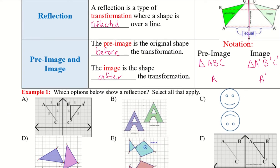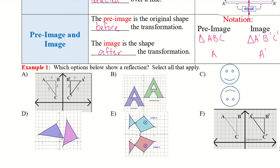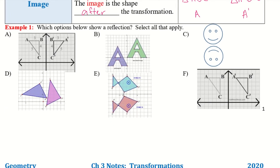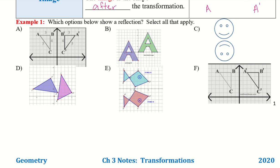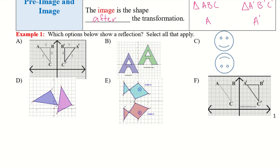Let's take a look at example one. Which option below shows a reflection — select all that apply. I'm going to give you a second to take a look at these and decide which ones you think are reflections. I ended up with A, C, and E.